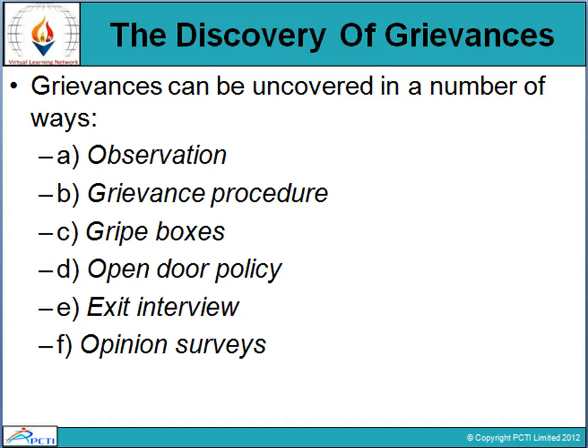How can we discover grievances? Grievances could be discovered by observation, through the grievance procedure, through suggestion or grievance boxes, open door policy, exit interviews — where grievances are clearly visible — and opinion surveys. These six methods help us judge where grievances exist and where they are not being properly managed.